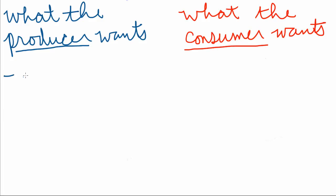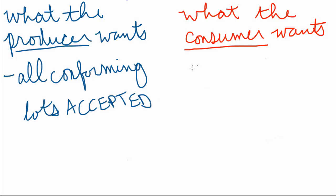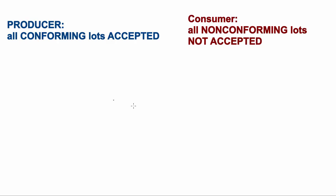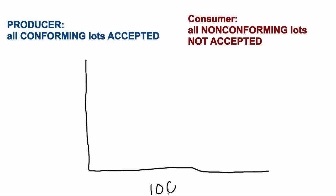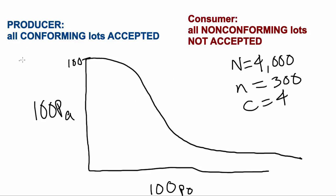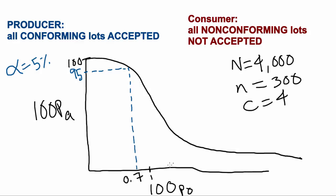Now let's look at acceptance sampling plans through the eyes of the producer and the consumer. What the producer wants is that all conforming lots will be accepted, whereas the consumer wants to be sure that all non-conforming lots will not be accepted. Let's start with an example of an OC curve with a lot size of 4,000, sample size of 300, and acceptance number of 4. We need to introduce a new term called the producer's risk, which is alpha. Let's say the producer is willing to take a 5% risk. We subtract this 5% from 100% probability of acceptance to get 95, then draw a line horizontally to find where it intersects with the OC curve, then draw a line down vertically to determine the percent non-conforming at that level.